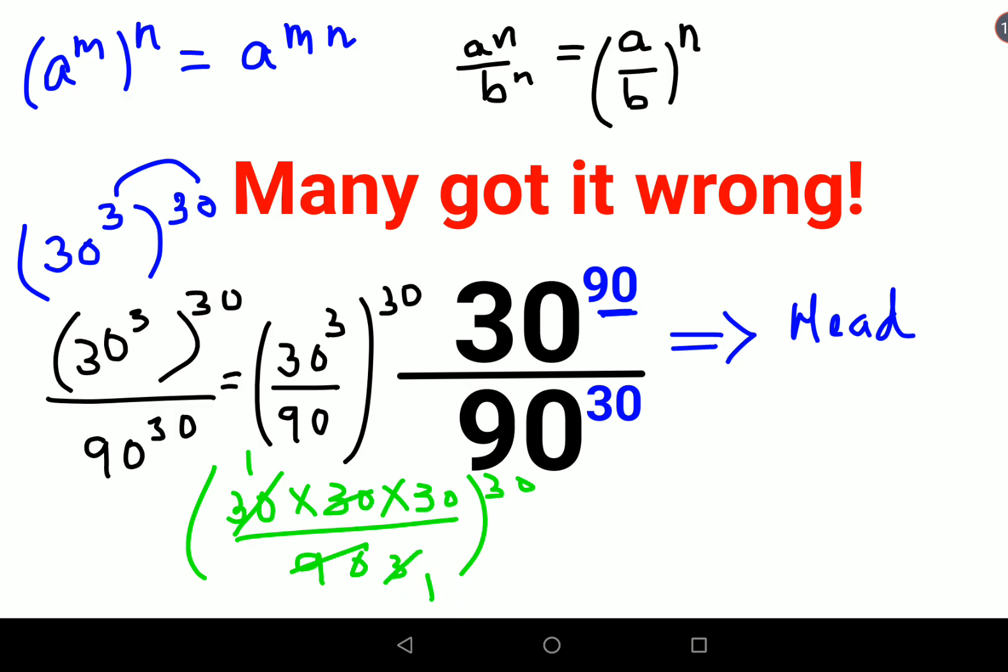So you're left with basically 30 into 30 into 10, that is 300 raised to 30. You saw how easily you could have done this in your head had you known these two laws of indices.